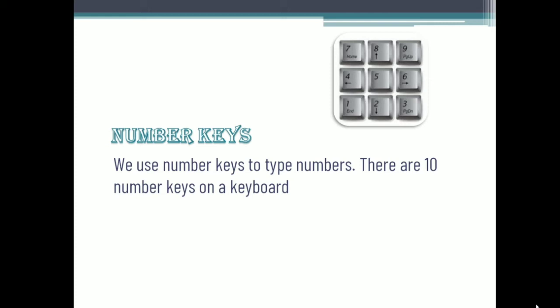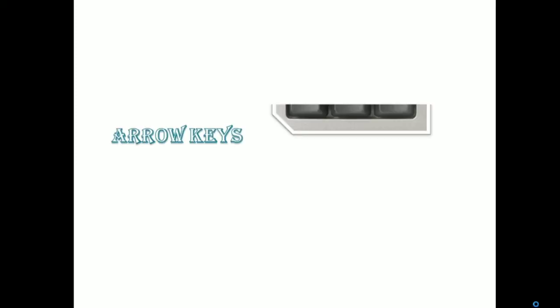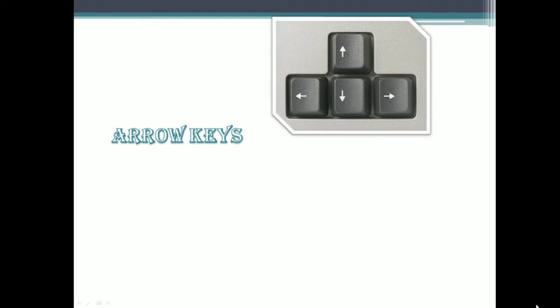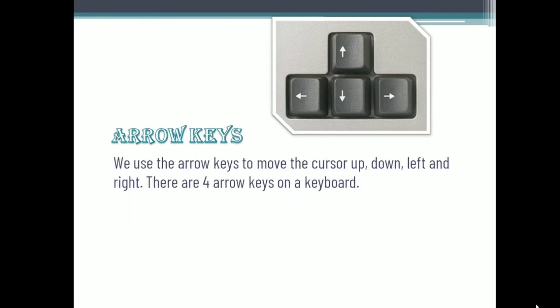We can type any numbers by using these 10 number keys. The third set of keys on the keyboard are called arrow keys. We can use the arrow keys to move the cursor up, down, left, and right. There are 4 arrow keys on a keyboard: the left arrow key, right arrow key, up arrow key, and down arrow key. By using these arrow keys we can move our cursor either up, down, left, or right.